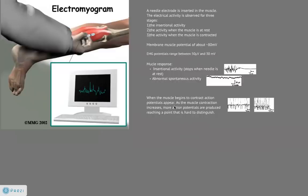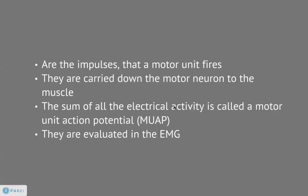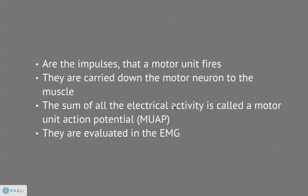Action potentials are the impulses fired by a motor unit and are carried down the motor neuron to the muscle. The sum of all the electrical activity is called a motor unit action potential, or MUAP, and this is what is evaluated during an EMG.